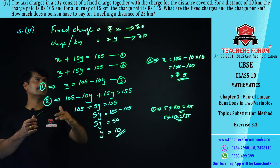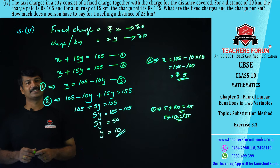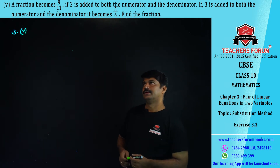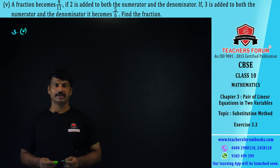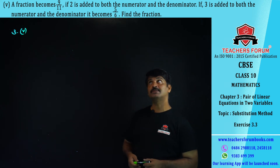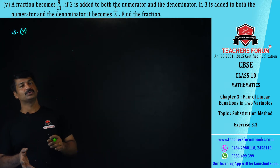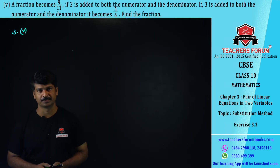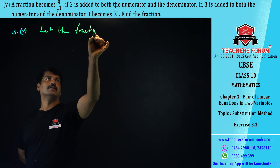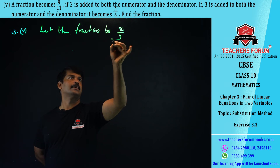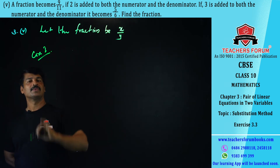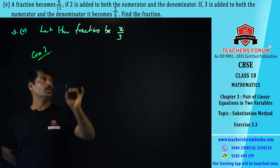Let us solve the fifth problem. It is given that a fraction becomes 9/11 if you add 2 to both numerator and denominator, and the same fraction becomes 5/6 if you add 3 to both numerator and denominator. We assume the fraction is x/y.